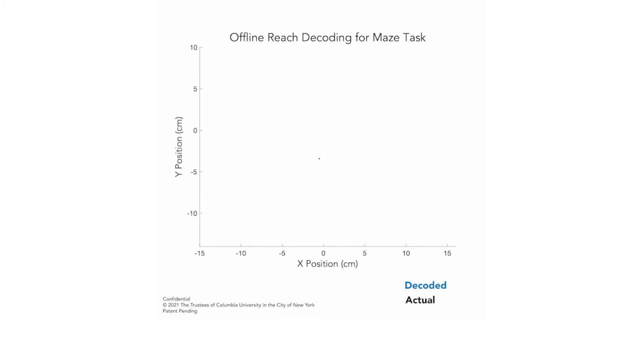So in the case of a paralyzed patient, obviously they're not actually making the movement. There wouldn't be any black line on the screen, only the blue line. The idea would be that the patient could move a cursor on a screen or any number of other objects simply by trying to make that movement.